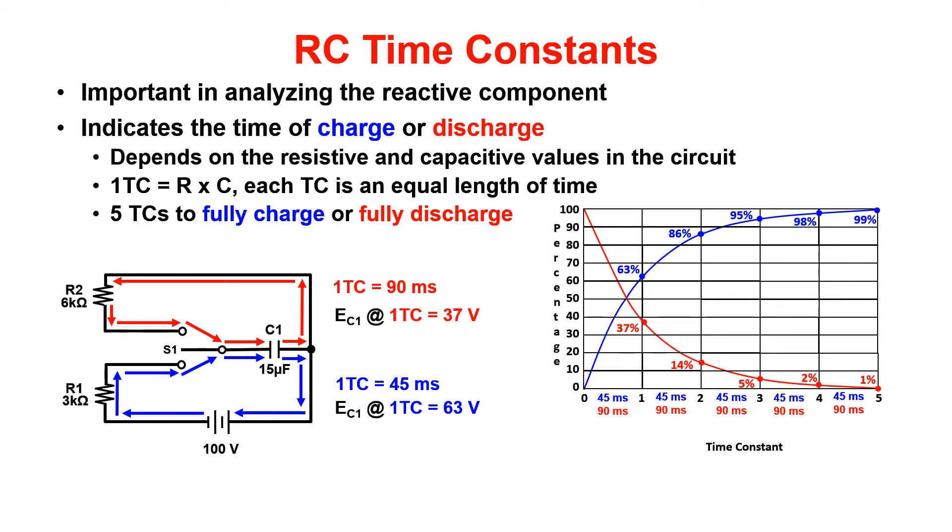Now each TC corresponds with the percentage of charge located in the table to the right. This table is also on your formula sheet. The line going up indicates the charge graph and the line going down indicates the discharge. One TC is 63%, two TC is 86%, and so on.